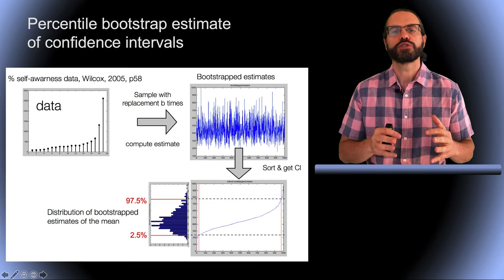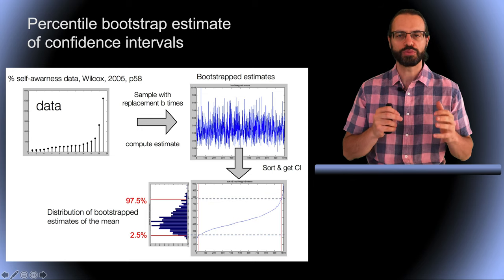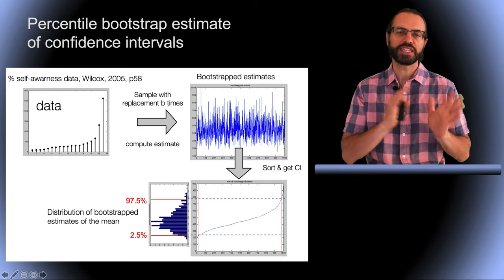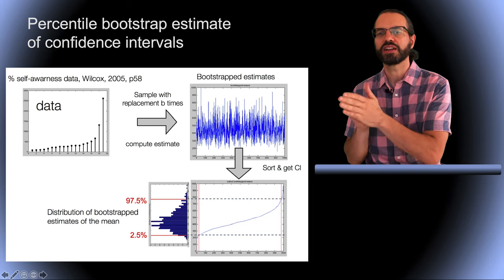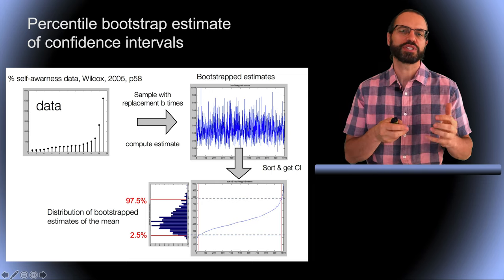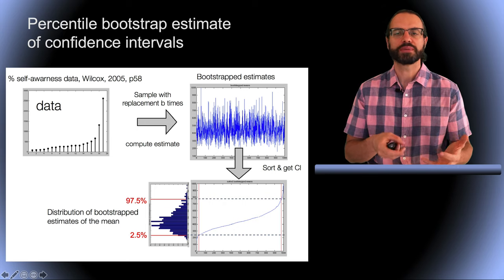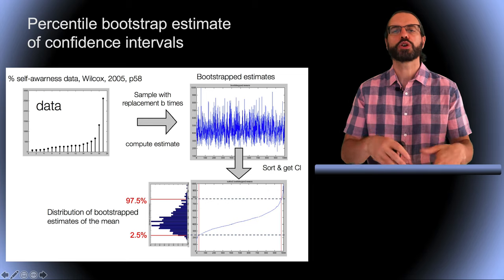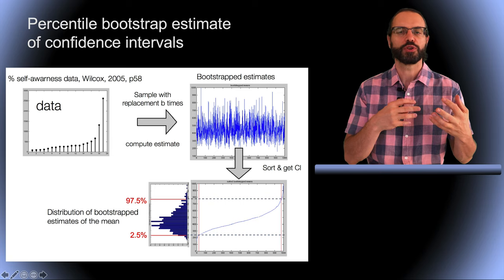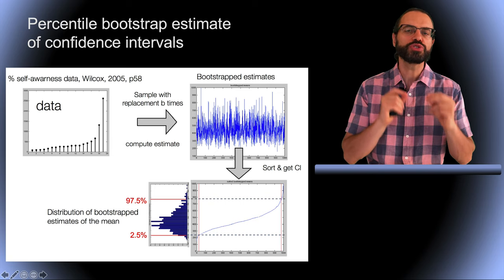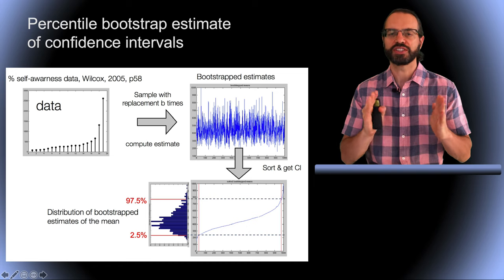Then we sort these values and we build a histogram. This is our probability density distribution. Finally, we look at the tail of the distribution, the 2.5% and 97.5% tail. We get the 95% confidence interval. It tells us, under the bootstrap assumption, that if we were to acquire 100 new samples, not draw samples as we did for bootstrap, but instead acquire new data, there is 95% chance they would lie within this interval.